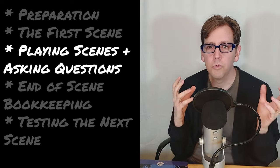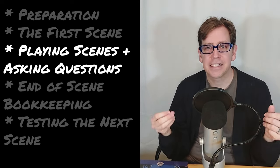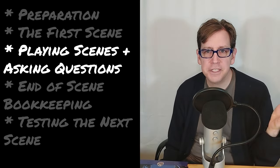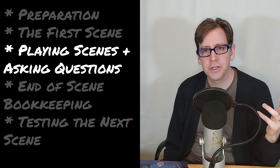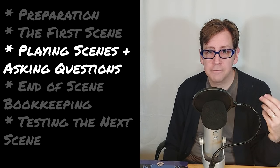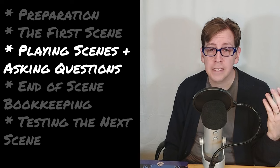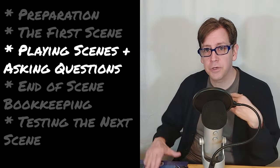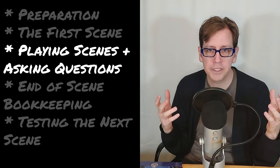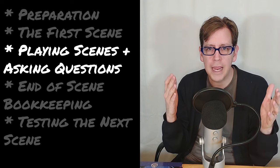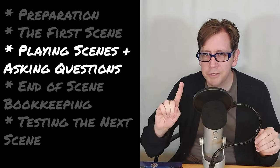Once we know what our first scene is, we can start playing and asking questions. What we do depends on what kind of question we need to answer. You might have a fate question, an oracle question, or a system question. This is my terminology — the book does use 'fate questions,' but the other two are names I've come up with. Fate questions are a really big part of Mythic, so I'm going to hold on to those for a moment.